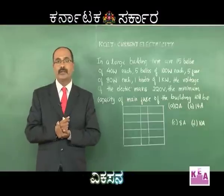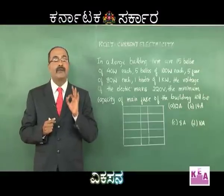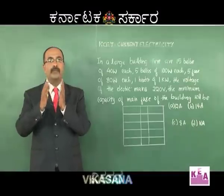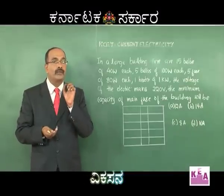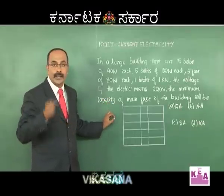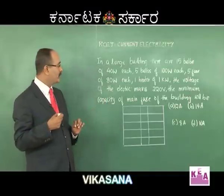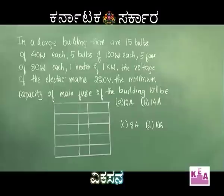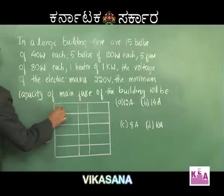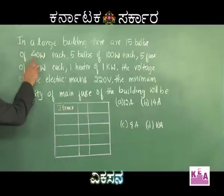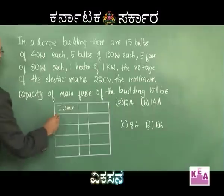The logic is simple: find total power consumed, divide by 220 volts, and the fuse capacity must be slightly greater than or equal to that value. First item: 15 bulbs of 40 watt each — let us write the items. 40 watt bulb, 15 in number.